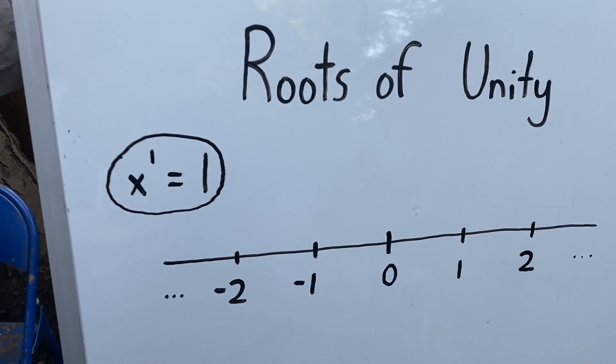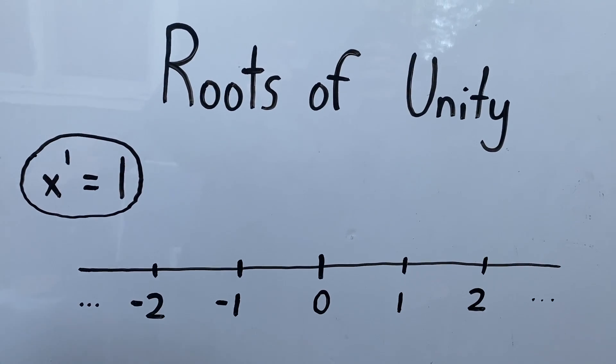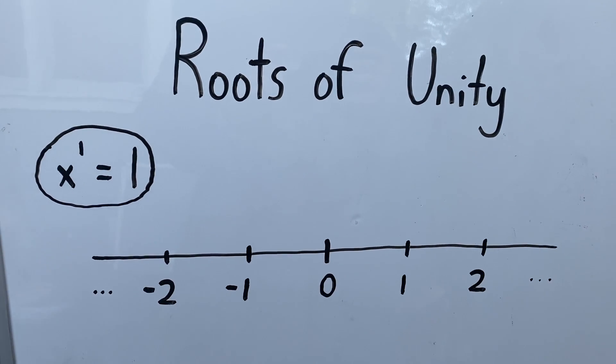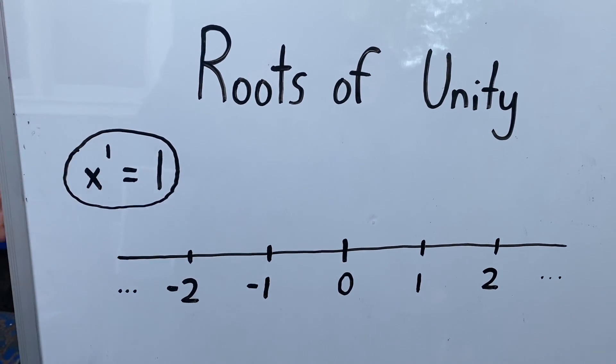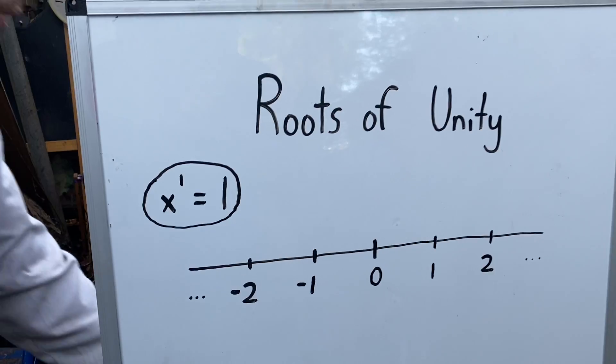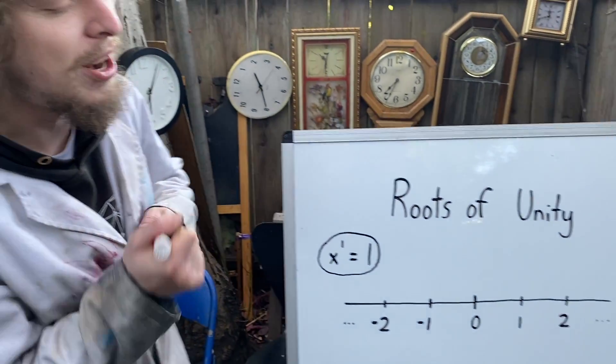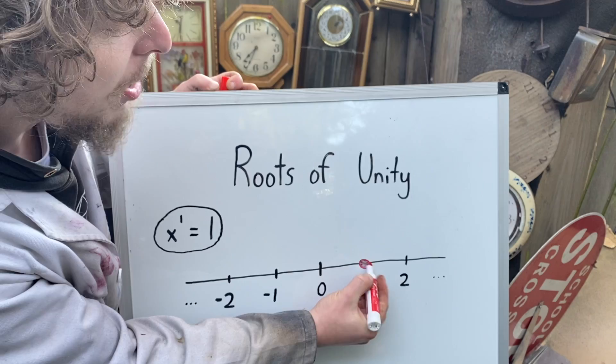The first Root of Unity, meaning which number is the first root of one, can be written as which number raised to the first power equals one. And there's only one number you're going to find with that property, the number one.